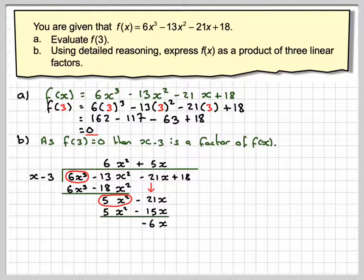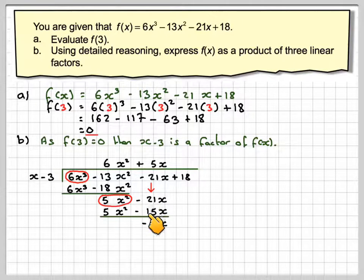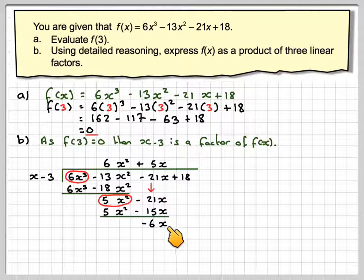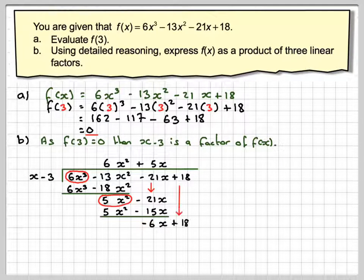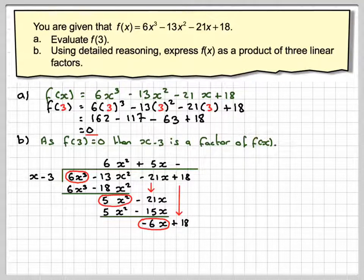Again, doing a subtraction and being careful that you do minus 21x minus minus 15x. So it's minus 21x plus 15x, which is minus 6x. Bring down the 18. And now you're going to divide minus 6x by x and get minus 6. Minus 6 times x gives you minus 6x. And minus 6 times minus 3 gives you plus 18.